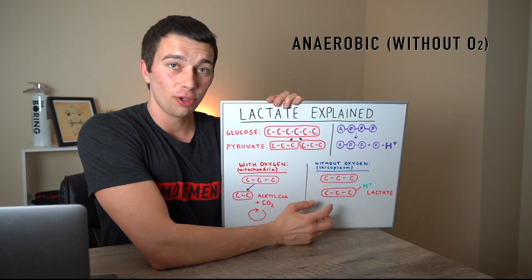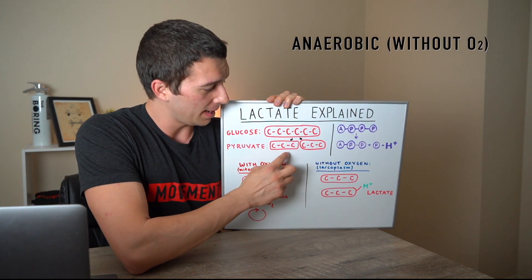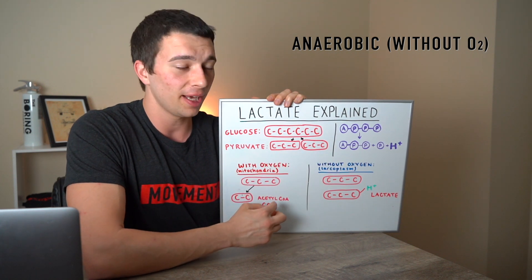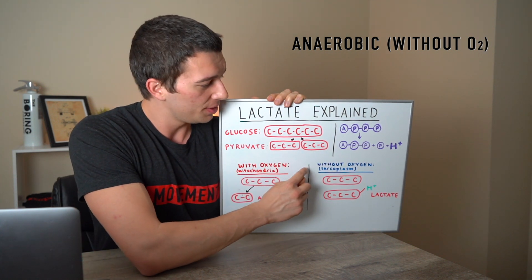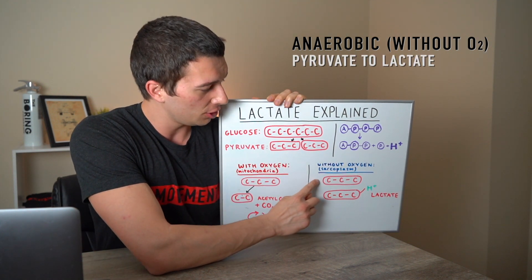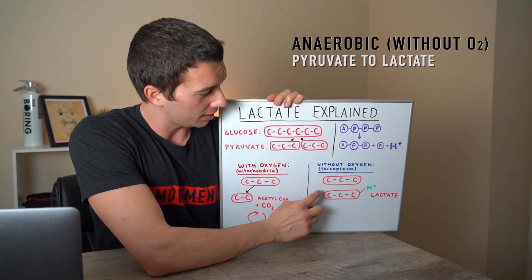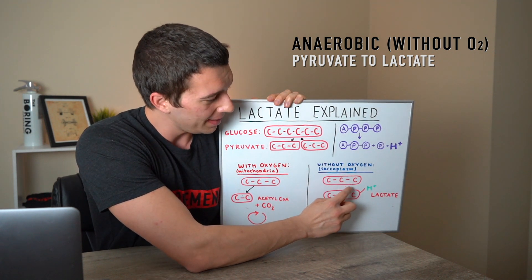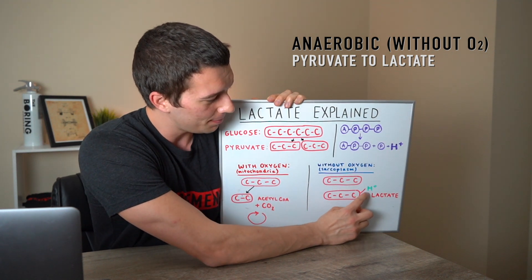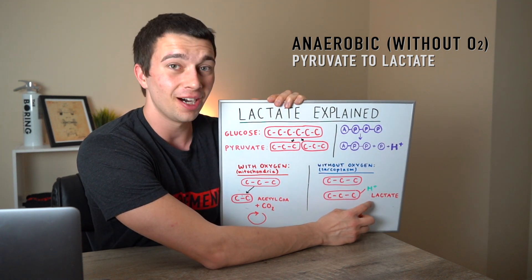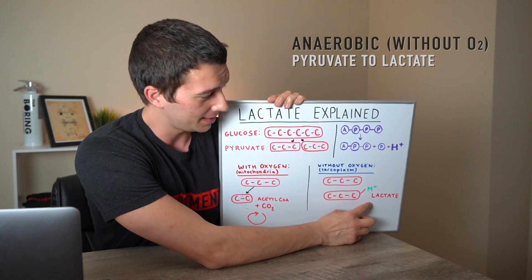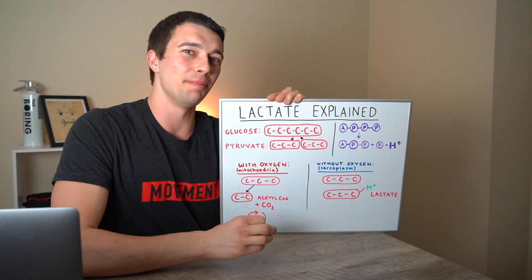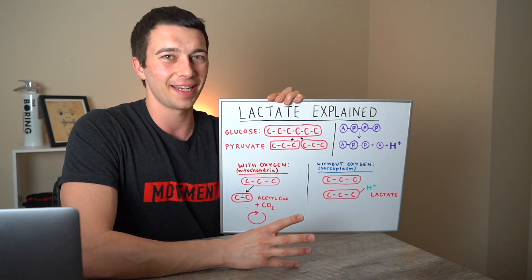In the anaerobic pathway, if we have that pyruvate molecule and don't have enough oxygen to metabolize it, it will actually turn into lactate. That three-carbon pyruvate molecule will basically accept a hydrogen ion and become lactate. Now here's where we can start breaking down some of the myths about lactic acid.